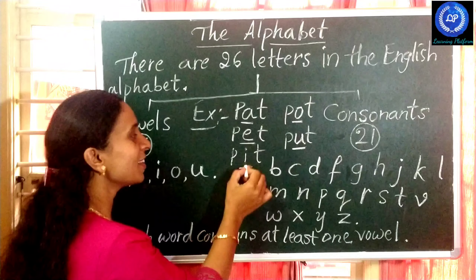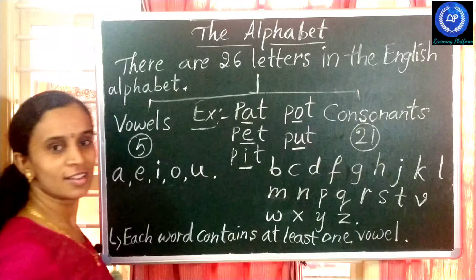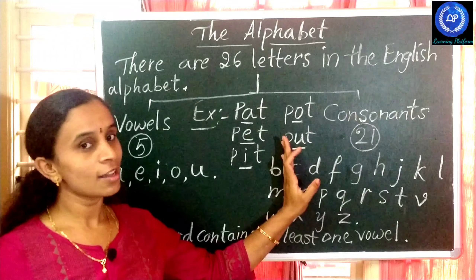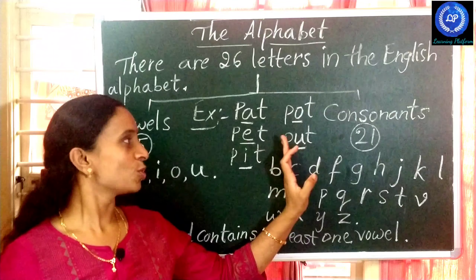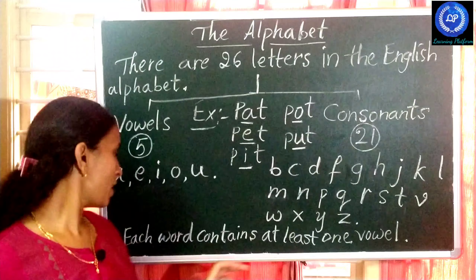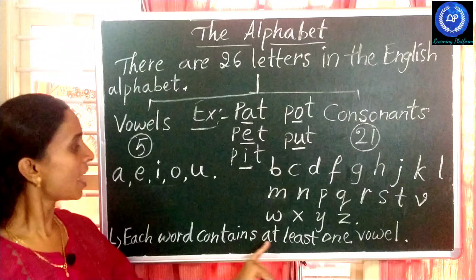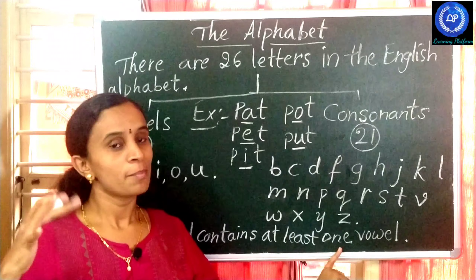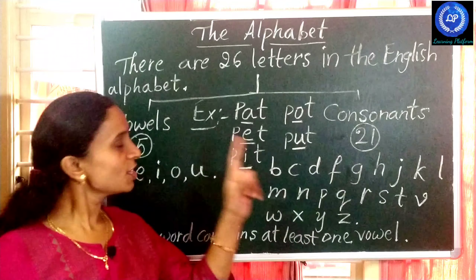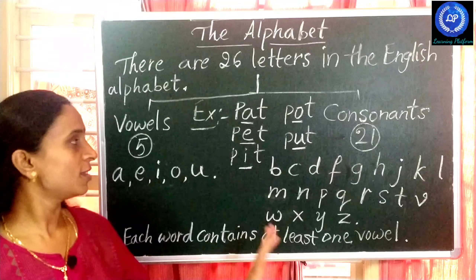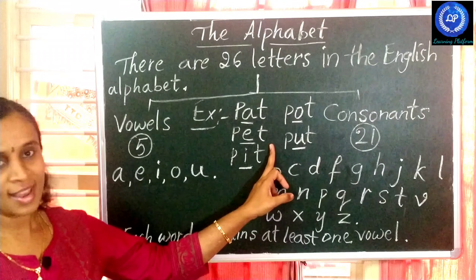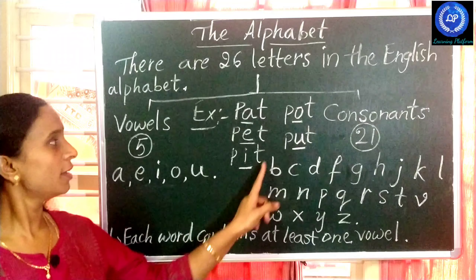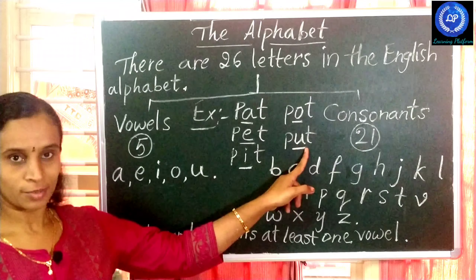Without a vowel, a word cannot be pronounced. That's why we say each word contains at least one vowel. For bigger words there may be more than one vowel, but at least one vowel is required to pronounce a word. See the difference: Pat, Pet, Pit, Pot, Put.